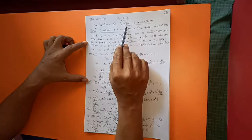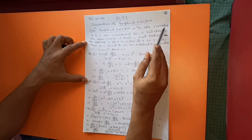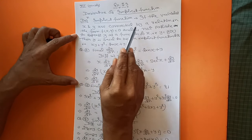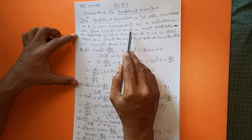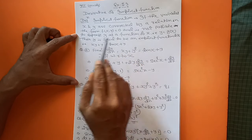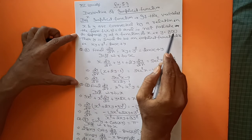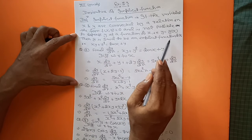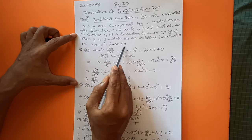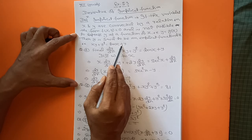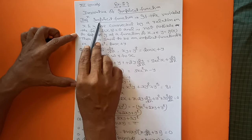First of all, we know what is an implicit function. The definition of implicit function: if the variables x and y are connected by a relation in the form f(x, y) = 0, and it is not possible to express y as a function of x — that is, y = g(x) — then y is said to be an implicit function of x. For example, xy + y² = 10x + y: in this equation, you cannot separate y in terms of x. That's why these are called implicit functions.